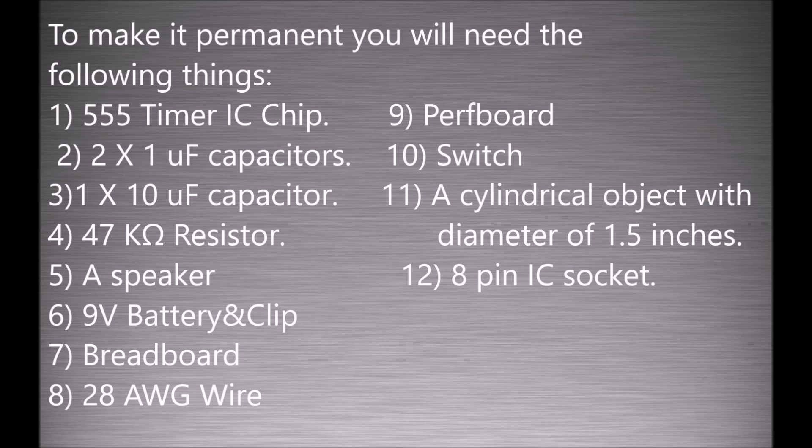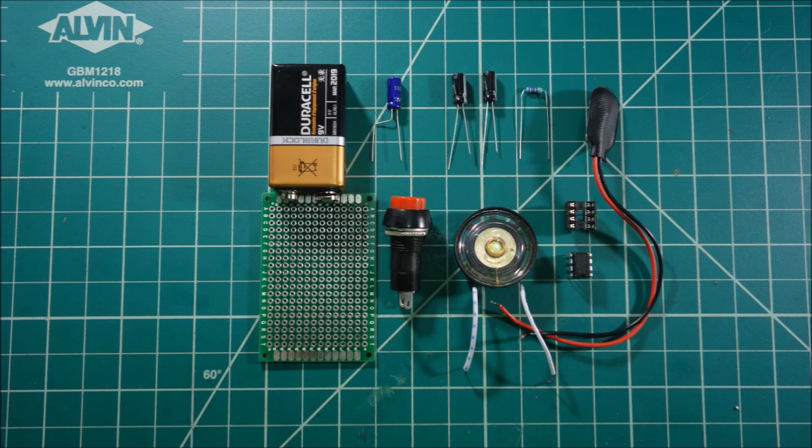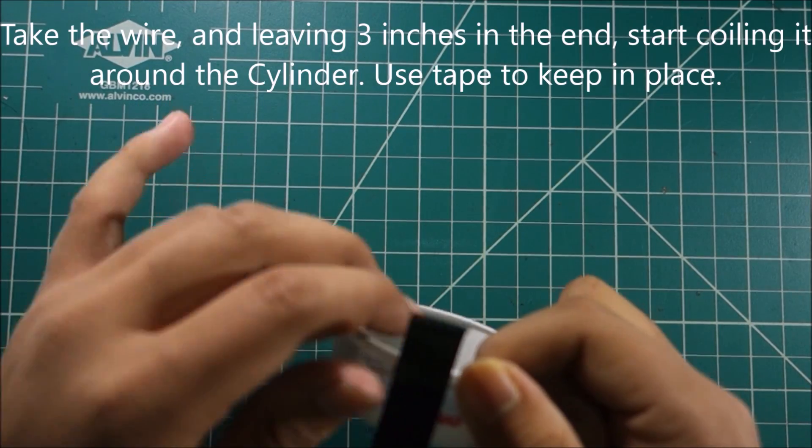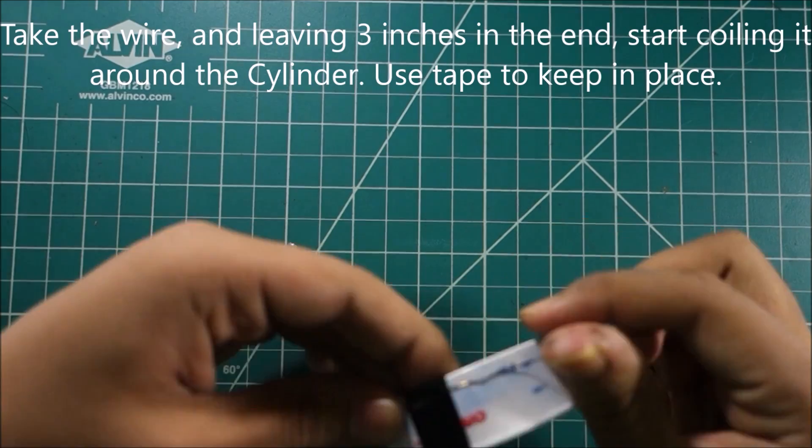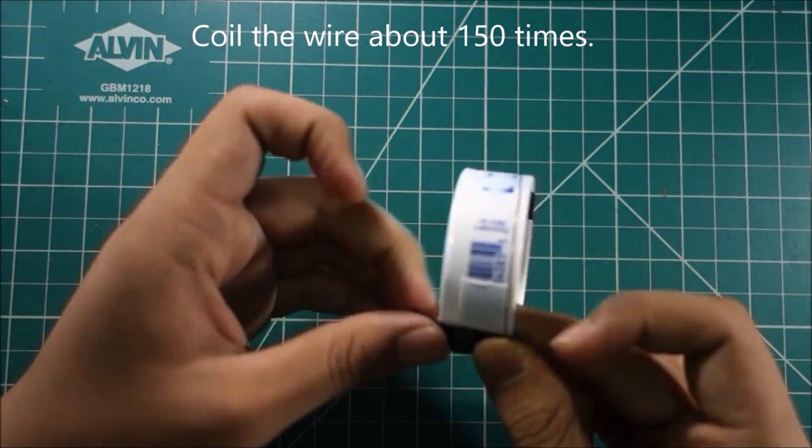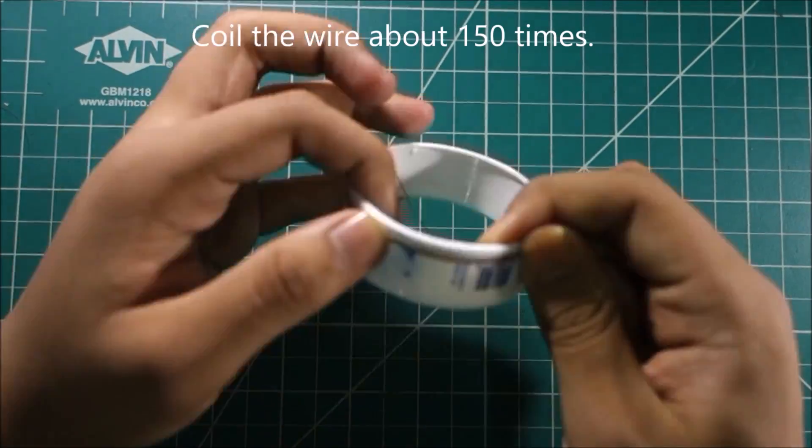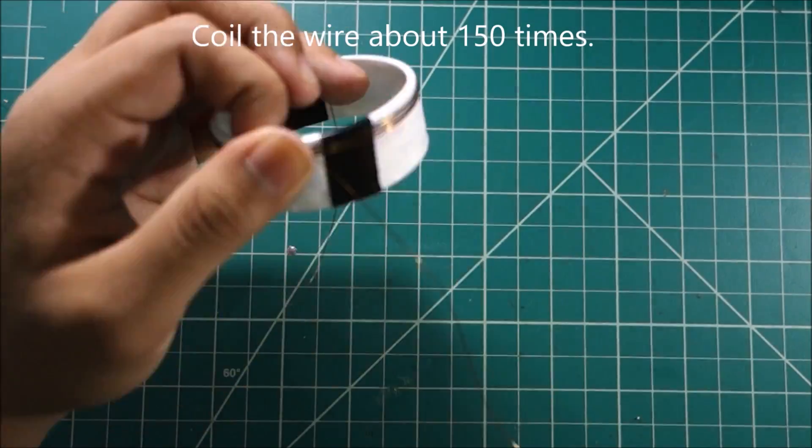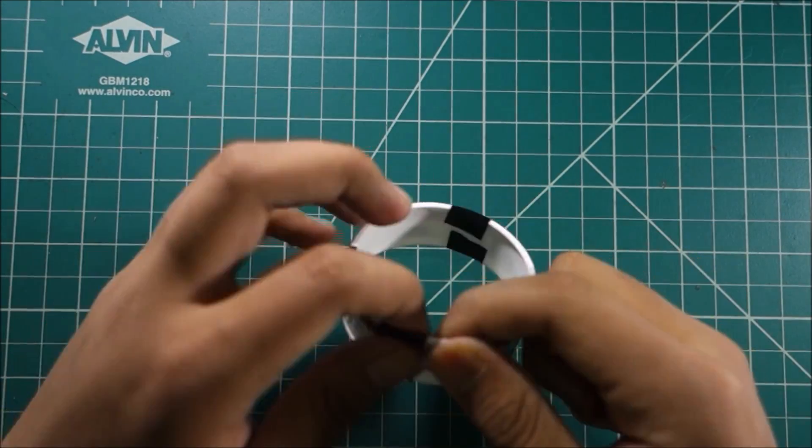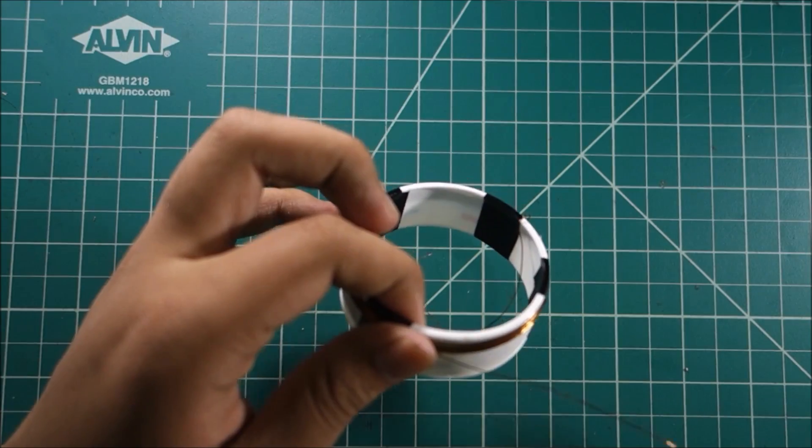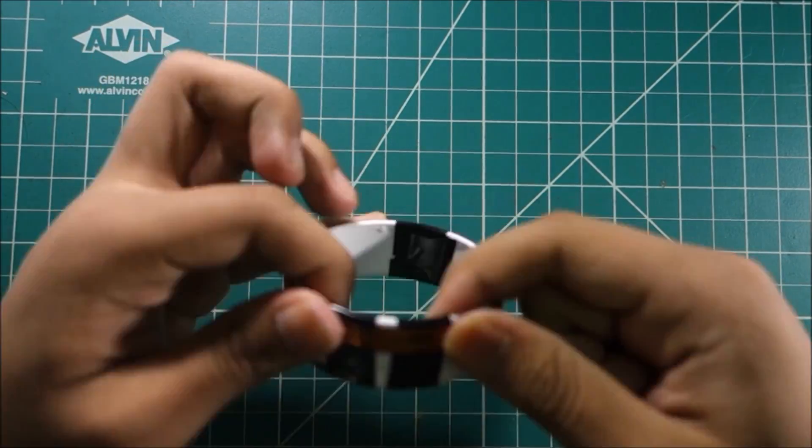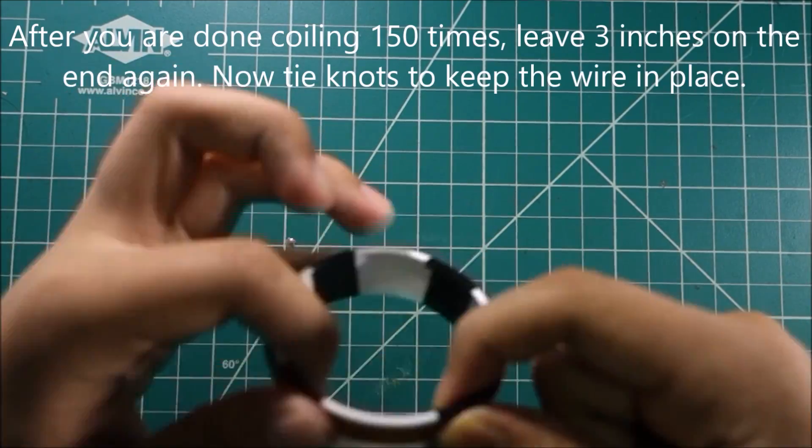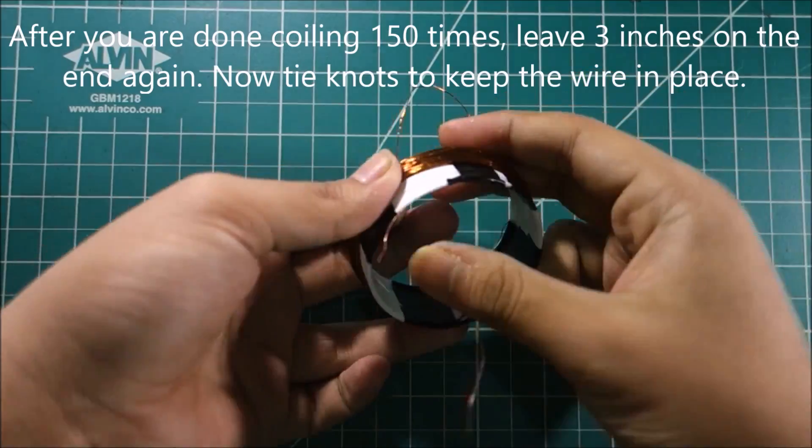To make it permanent you will need the following things. Take a cylindrical object with a diameter of 1.5 inches and wrap wires around it 150 times. Use tape to keep the wires in place. After you are done coiling 150 times leave 3 inches of wire on the end again.